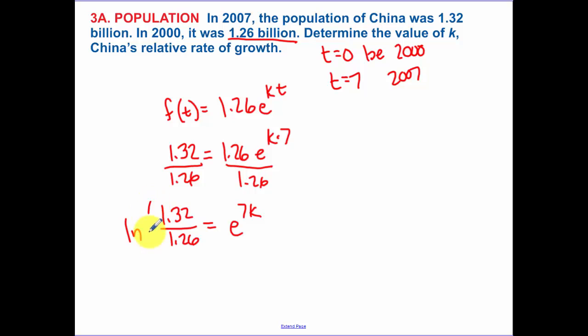Now I take the natural log, or I should write that as a natural log. I have the natural log of 1.32 divided by 1.26 equals 7k. I divide by 7. So k is equal now to 0.0066, and k, that's our rate of growth.